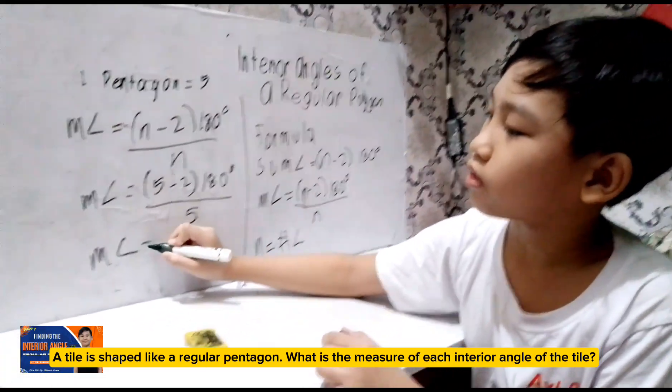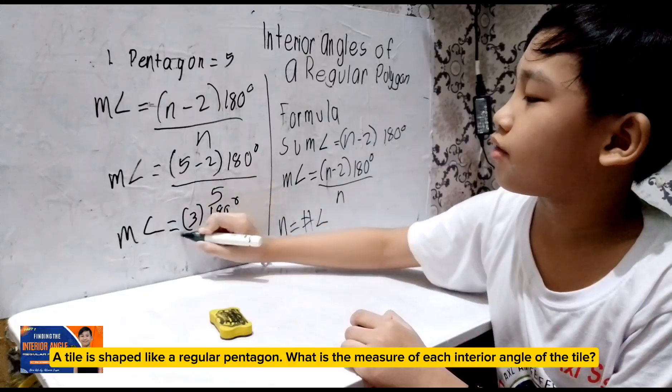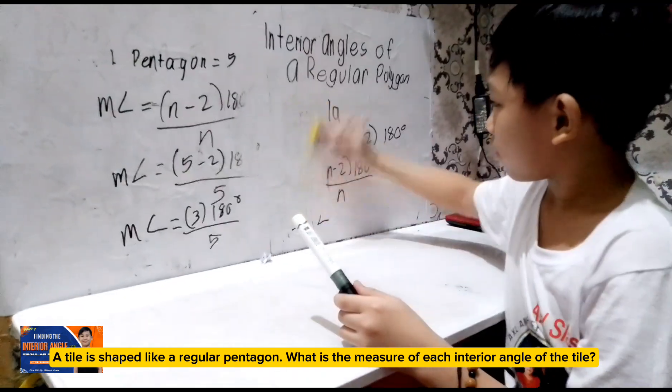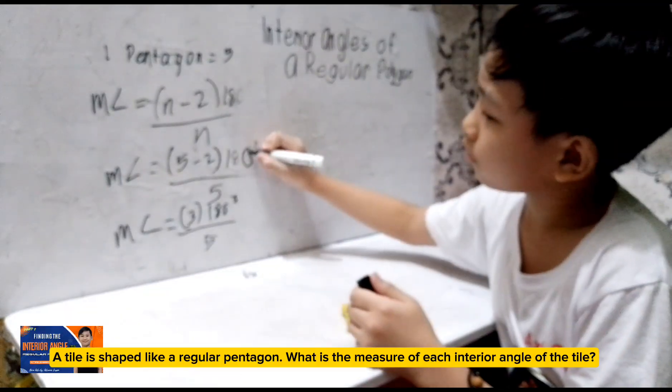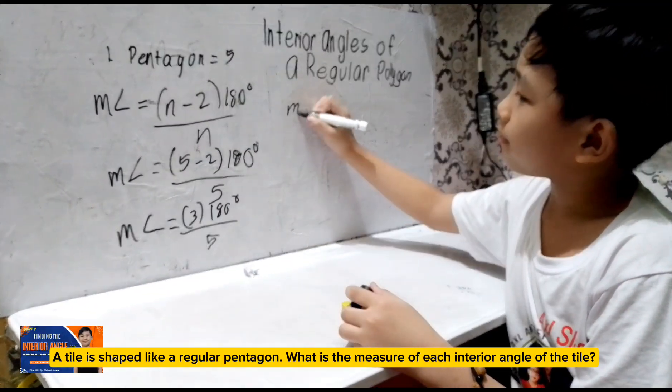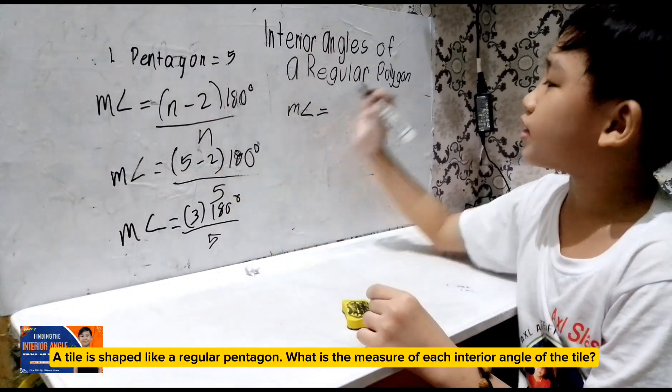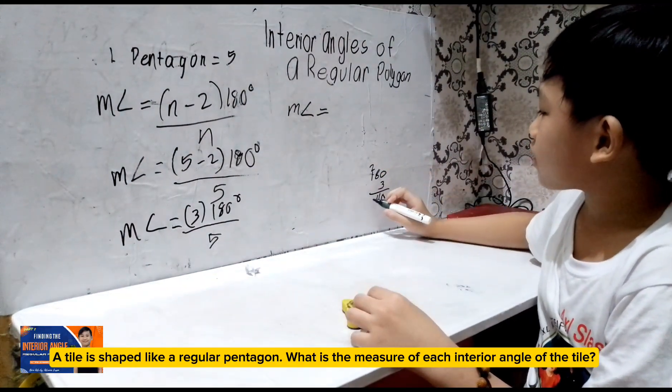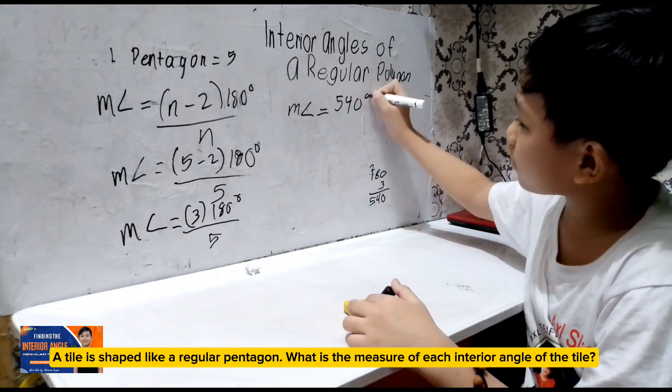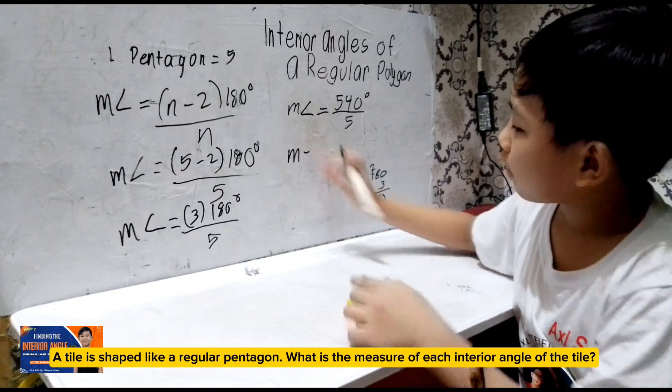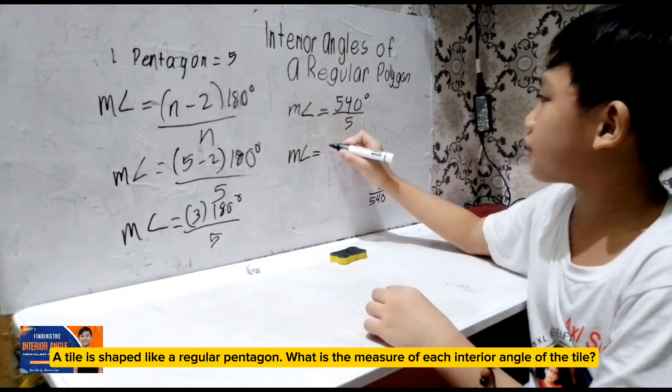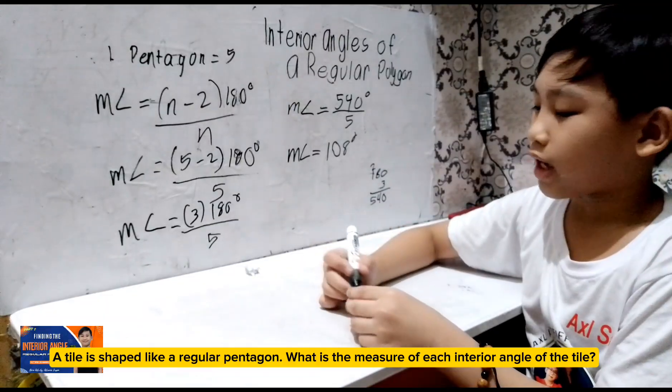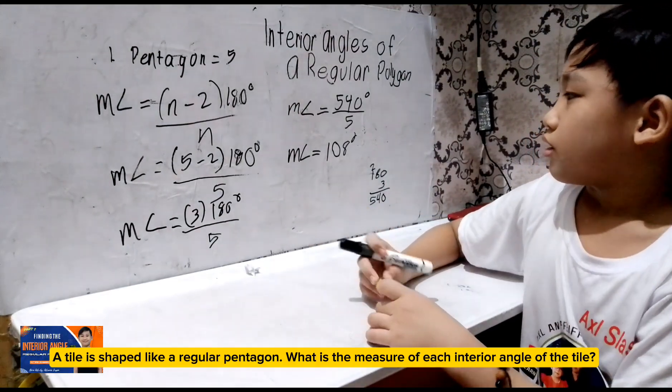Equals 5 minus 2 multiplied by 180 degrees divided by 5. Now, N equals 3, 180 degrees divided by 5. So, 180 times multiplied by 3 is 0, 8 times 3, 24, 1 times 3, 3. 540 degrees divided by 5. Now, measurement of each interior angle is 500, so 108.